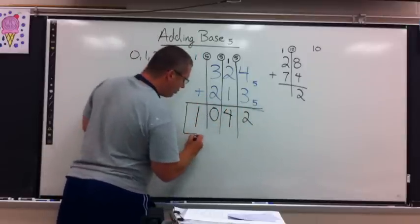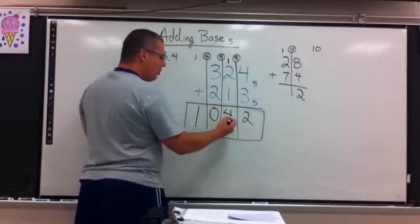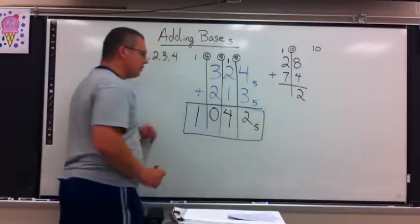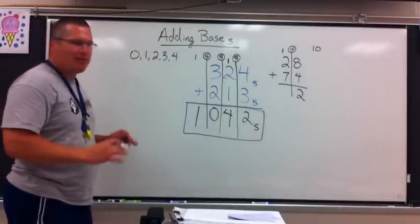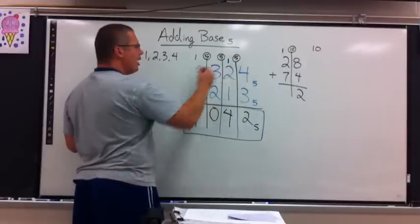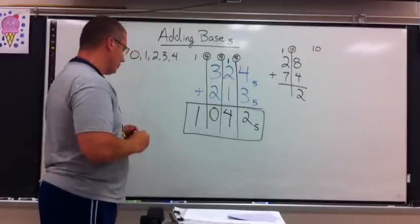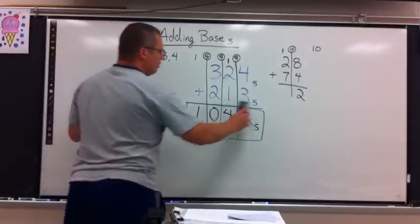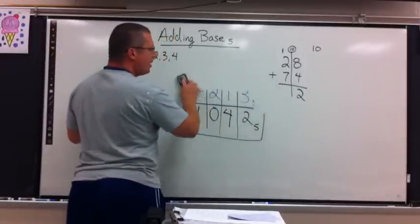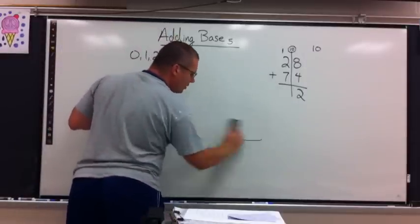Bring down the 1. And my final answer is 1042 base 5. So again, the adding, the rules are going to be the same. The only thing different is what I'm allowed to carry over. And that's why I didn't write the place values, because it really doesn't come into play.